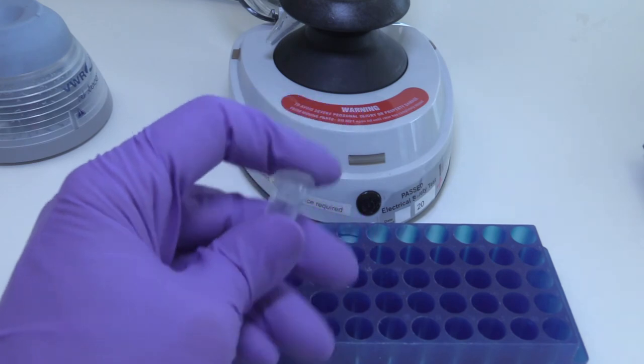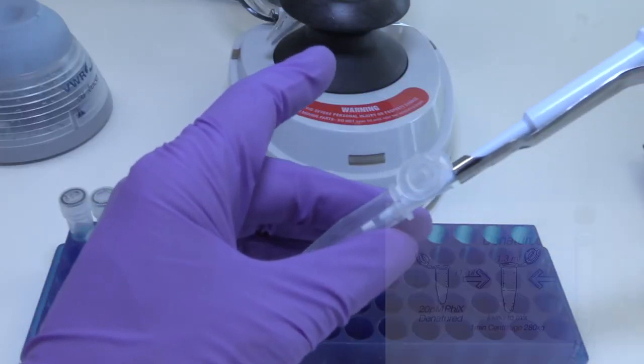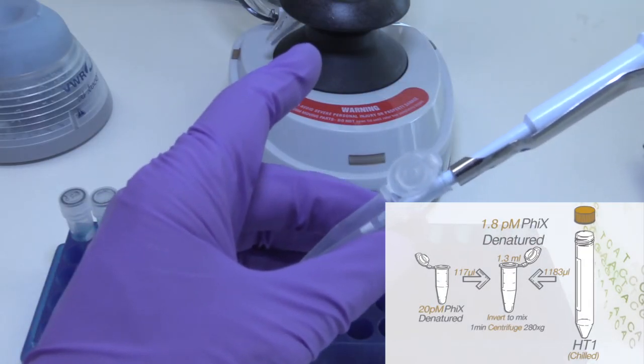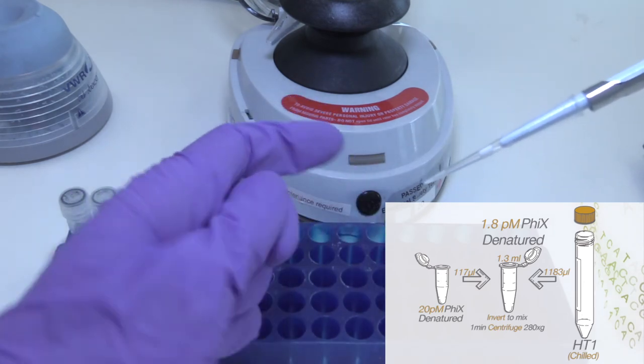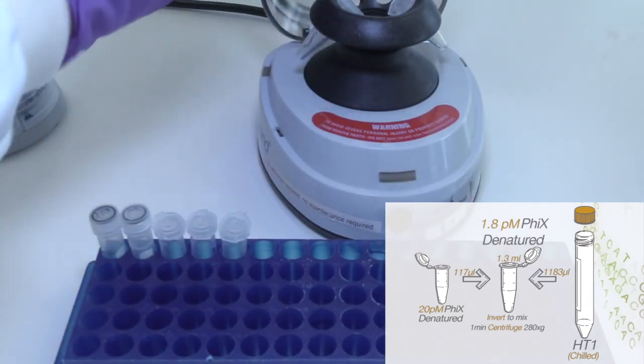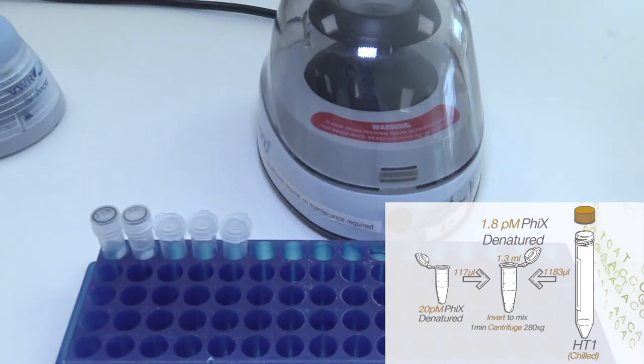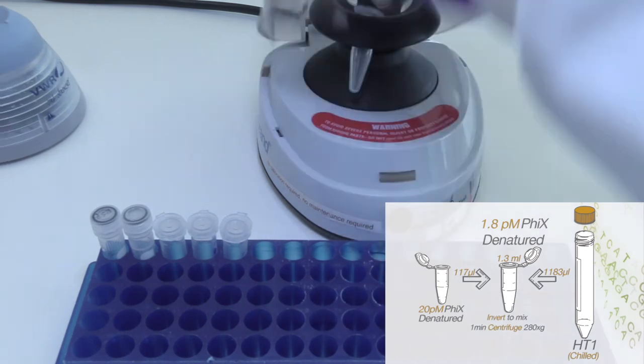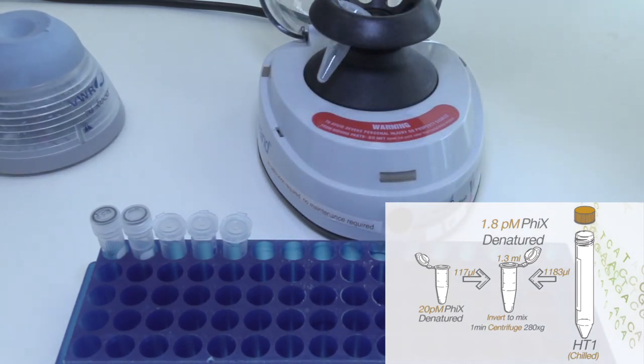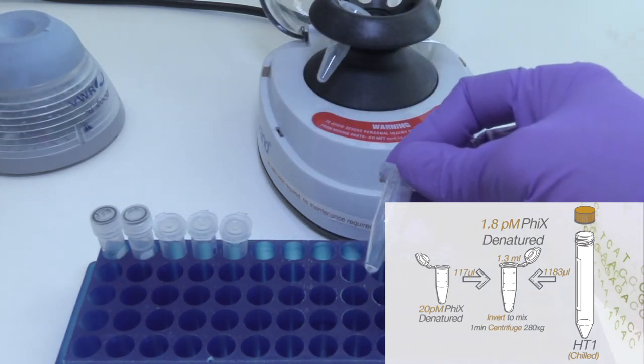Further dilute the denatured 20 picomolar Phi-X to 1.8 picomolar as follows: Combine 117 microliters of denatured Phi-X and 1183 microliters of pre-chilled HT-1. Invert to mix and then centrifuge at 280 times G for one minute.